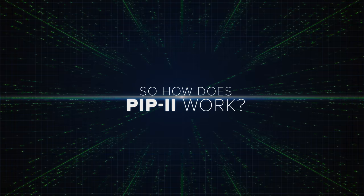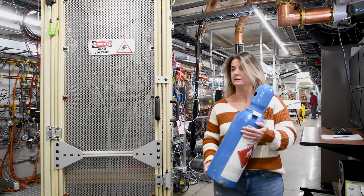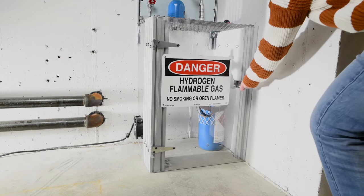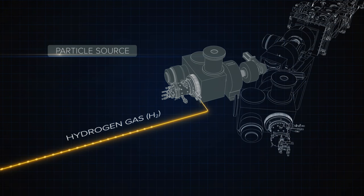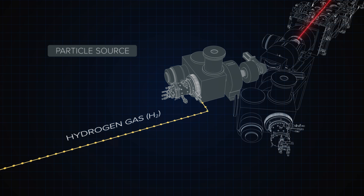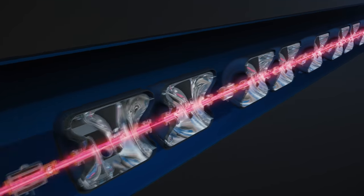So how does PIP2 work? PIP2 starts with a bottle of hydrogen gas. One bottle provides enough particles to send beams to our experiments for a few months. The machine uses electric fields to accelerate particles to high energy. But these fields can only propel electrically charged particles, not the neutral atoms of hydrogen gas.